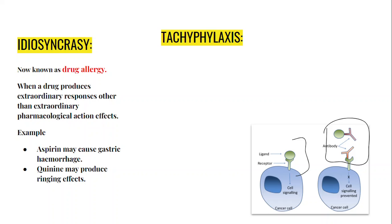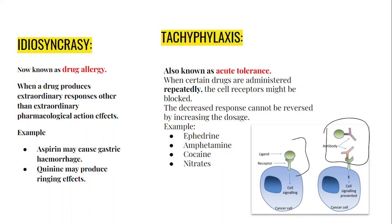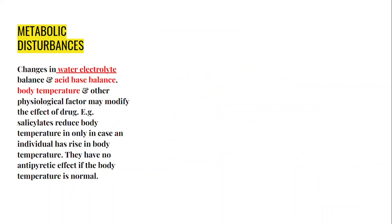Tachyphylaxis, also known as acute tolerance, occurs when certain drugs are administered repeatedly and the cell's receptors get blocked — a condition that may not be reversed by increasing the dosage. Examples include ephedrine, amphetamine, cocaine, and nitrites, which show acute tolerance when administered repeatedly. The last point is metabolic disturbances: changes in water-electrolyte balance, acid-base balance, body temperature, and other physiological factors may modify the effect of a drug. For example, salicylates reduce body temperature only when an individual already has a raised temperature; they have no antipyretic effect if body temperature is normal.